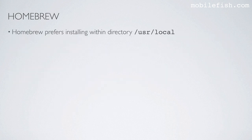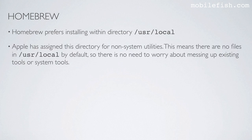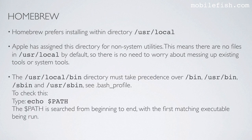Homebrew prefers installing within the directory /usr/local. Apple has assigned this directory for non-system utilities. This means there are no files in /usr/local by default, so there is no need to worry about messing up existing tools or system tools. The /usr/local/bin directory must take precedence over /bin, /usr/bin, /sbin, and /usr/sbin.